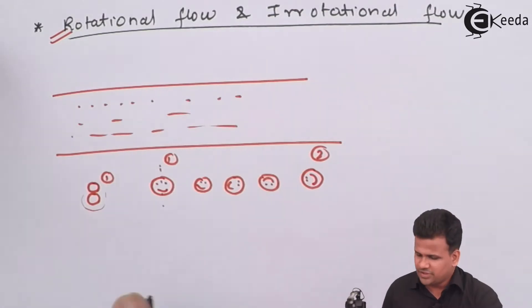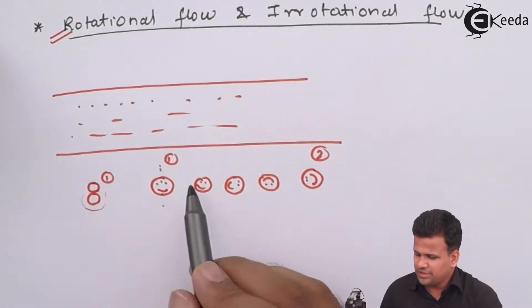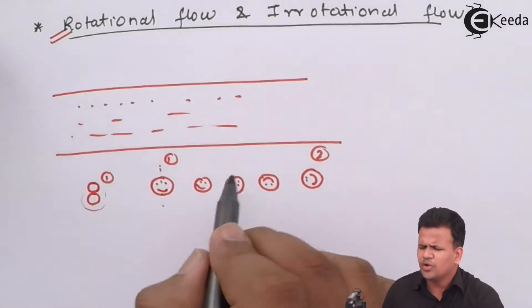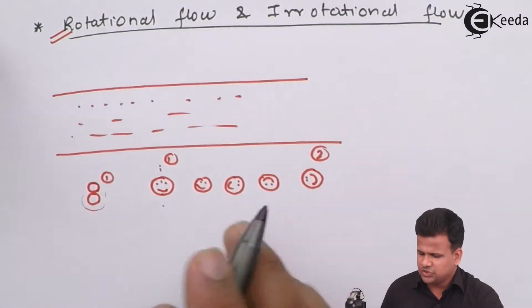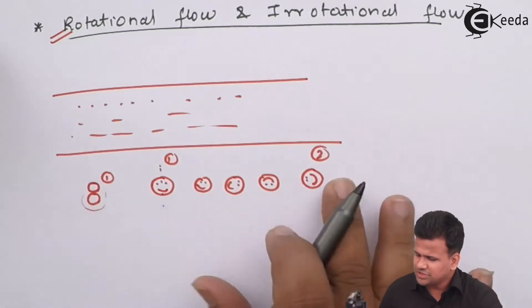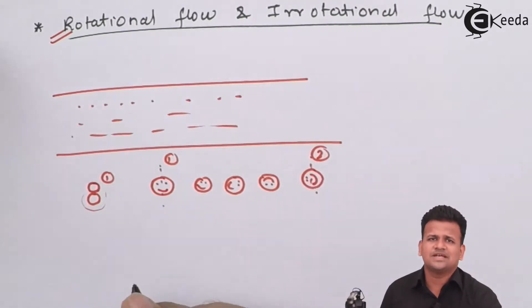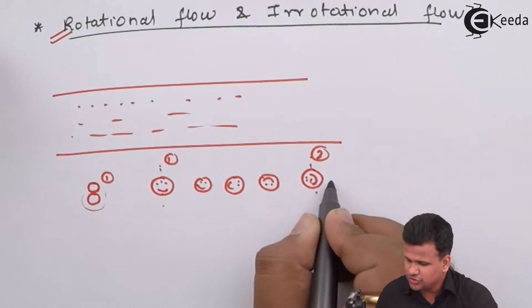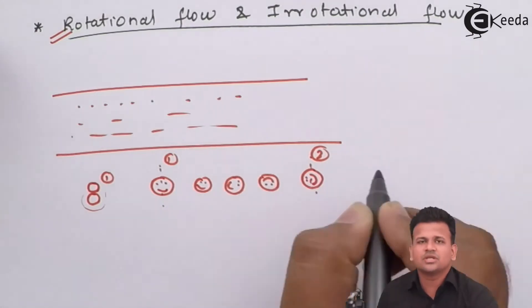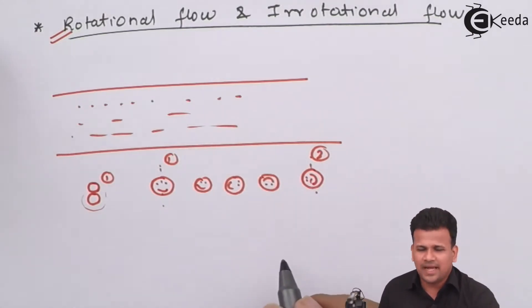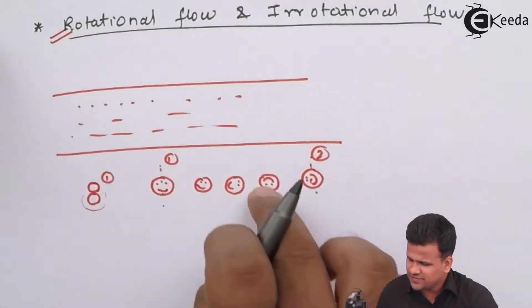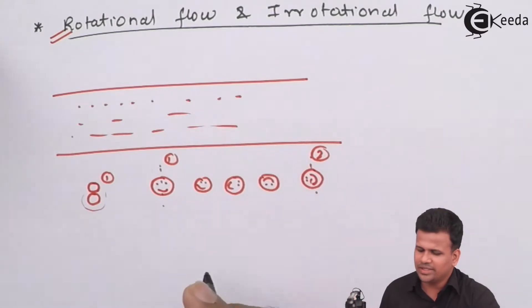Rotational flow can be defined as a flow in which a molecule rolls over a surface or over another molecule. The kind of motion involved is called general plane motion — in which there is both linear motion and rotational motion. So this kind of motion, where the fluid is flowing as well as rotating along its axis, is called rotational flow.